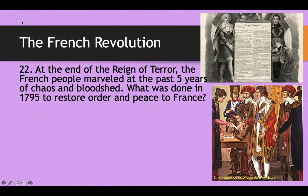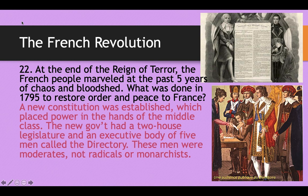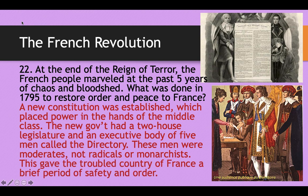At the end of the Reign of Terror, people took a deep breath and marveled at the past five years of chaos and bloodshed, asking what could be done to restore order and peace to France. So yet another new constitution was established, this time placing power in the hands of the middle class. This new government had a two-house legislature and an executive body of five men called the Directory — moderates who weren't radicals or monarchists — and this gave France a brief period of safety, order, and peace after the tumultuous Reign of Terror.